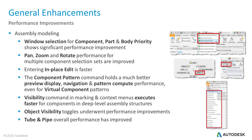Next topic is performance improvements in several areas of Inventor 2020. Major graphics improvements have been made for component selection. The window selection for component, part, and body priority shows significant performance improvements. Depending on the dataset, we have seen up to 90% faster component selection than in Inventor 2019. Pan, zoom, and rotate performance for multiple component selection sets has also been improved.